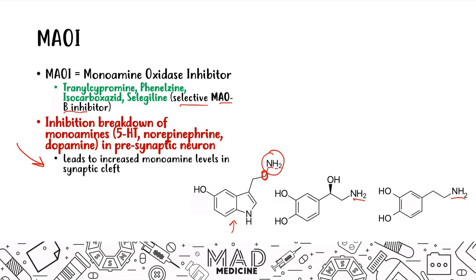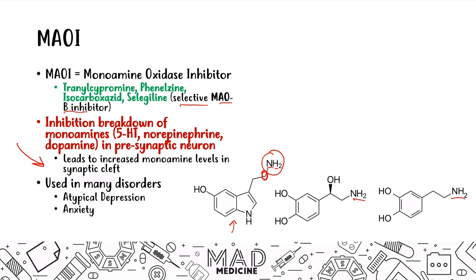MAOIs are used in many disorders, but mainly now they're used for atypical depression and anxiety. They're also used for Parkinson's disease, and the selective drug used for that is selegiline.